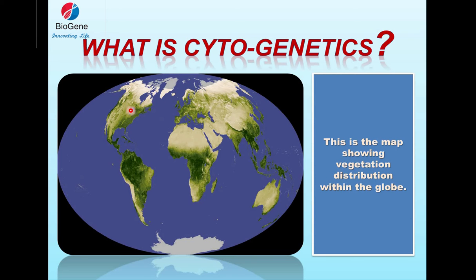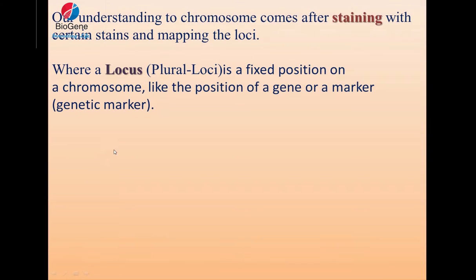Similarly, in our case, like the chromosomes, we can stain our chromosomes via several banding techniques by which we can identify the different sections within the chromosome. Using different banding techniques, the same chromosomes can be stained and studied in several ways. So, our understanding of chromosomes comes after staining with certain stains and mapping those loci.